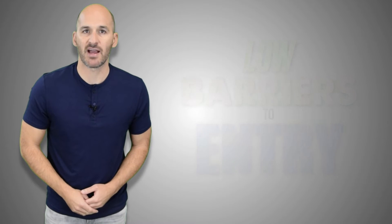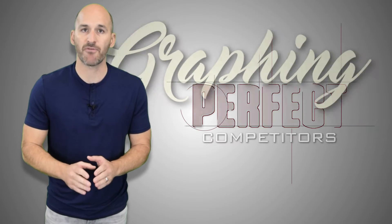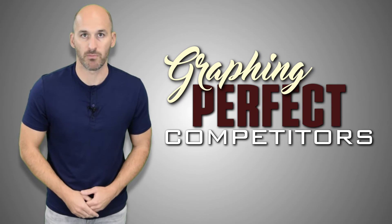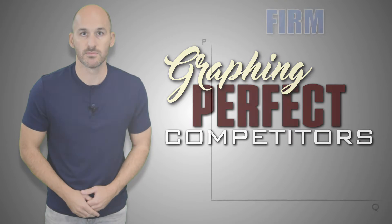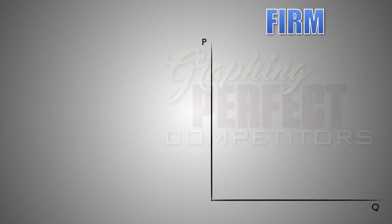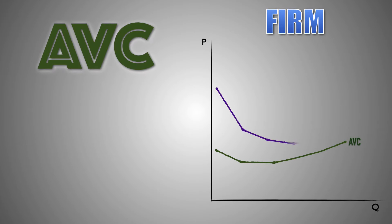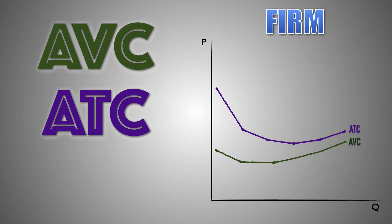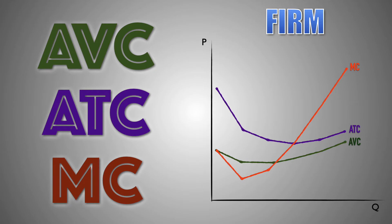Now that we've covered these facts, let's move on and take a look at graphing a perfectly competitive firm. Let's begin by graphing the per-unit production cost curves for the firm. Here we can see the average variable cost, the average total cost, and the marginal cost for the firm at various levels of output.